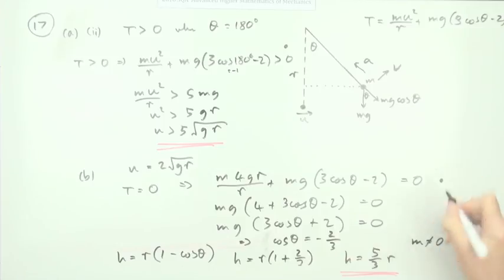And there it is. There were three marks here. The first part was for realizing it'll stop when the tension gets to zero, that was a mark. Solve that equation to get cos theta's negative 2 thirds, that's a mark. And then pop it back in to find the height or an expression for the height. There's the three marks, and that's question 17 finished, and that's the whole paper done.